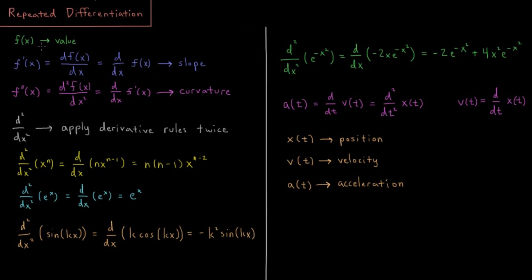Some examples we can go through: the second derivative of a polynomial would be the first derivative of the derivative rules applied to the polynomial. So n times x to the n minus 1 is the first derivative; taking the derivative of that, we get n times (n minus 1) times x to the n minus 2. For the second derivative operator acting on e^x, well the first derivative of e^x is just e^x, so the second derivative is also e^x.